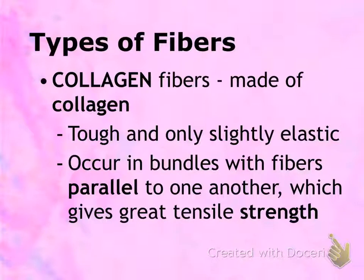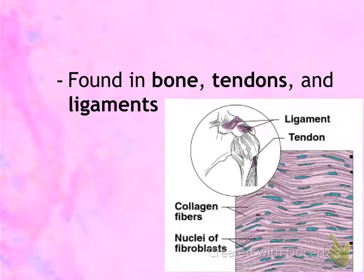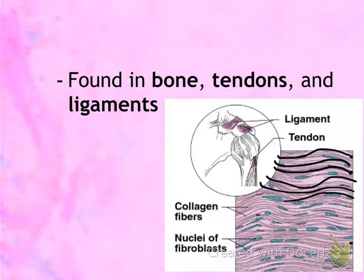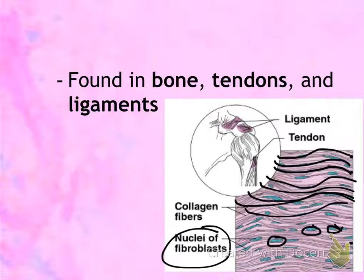The three types of fibers you'll run into: the first is collagen, which is the thickest of the three. It is tough and flexible, but it resists stretching, so it provides strength. You're going to find a lot of collagen fibers in bone, ligaments, and tendons. In the picture of a shoulder tendon, all of those black lines running through the tissue are collagen fibers, and the turquoise-looking structures are the nuclei of the fibroblasts that are making those collagen fibers.